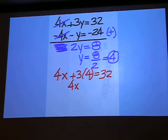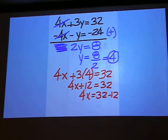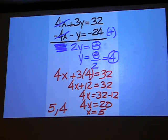Then 4x plus 12 equals 32. 4x equals 32 minus 12, and 4x equals 20. Divide to get an answer of 5 for x, which makes the final answer x equals 5 and y equals 4.